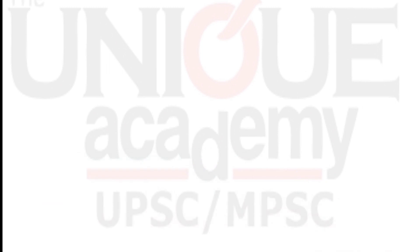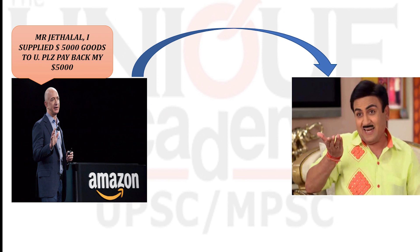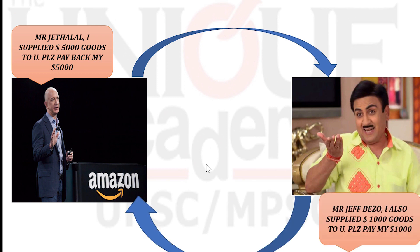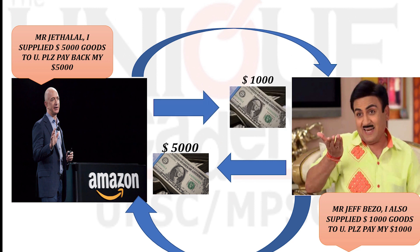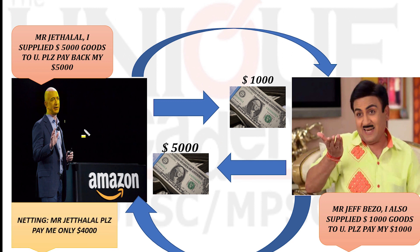Let's imagine we have two businessmen — Jeff and Jitalal. Jitalal purchased goods worth $5,000 from Jeff. Similarly, Jeff purchased goods worth $1,000 from Jitalal. In ordinary transactions, Jitalal would pay $5,000 to Jeff, and Jeff would pay $1,000 to Jitalal.